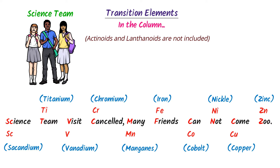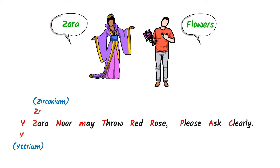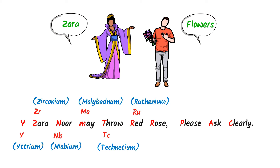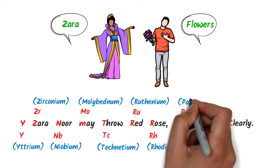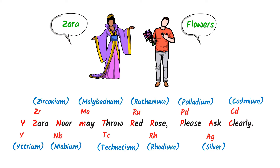Secondly, consider a famous actress Zara Noor. I send her some flowers, but there is a problem — why Zara Noor methrou red rose? Please ask clearly. Here, Y stands for Yttrium, Zr stands for Zirconium, Nb stands for Niobium, Mo stands for Molybdenum, Tc stands for Technetium, Ru stands for Ruthenium, Rh stands for Rhodium, Pd stands for Palladium, Ag is the symbol of Silver, Cd stands for Cadmium. This is the second column of transition elements.